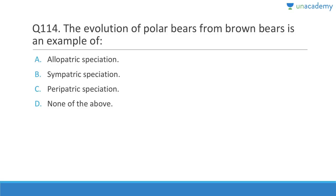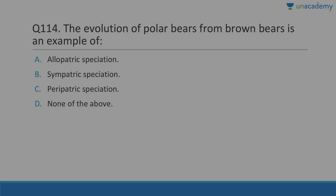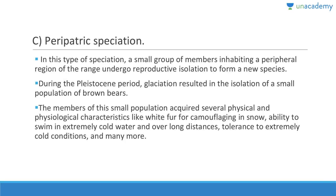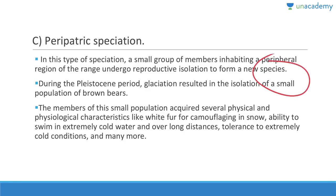Question 114: The evolution of polar bears from brown bears is a typical example of peripatric speciation — a small group inhabiting a peripheral region undergoes reproductive isolation to form a new species. During the Pleistocene, glaciation isolated a small brown bear population; they then acquired white fur for camouflage, ability to swim in cold water, and tolerance to extreme cold.